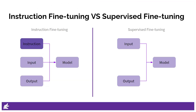The main difference between instruction tuning and standard supervised fine-tuning lies in the data on which the model is trained. While supervised fine-tuning trains models on input examples and their corresponding outputs, instruction tuning augments input-output examples with instructions, allowing instruction-tuned models to generalize more easily to new tasks.